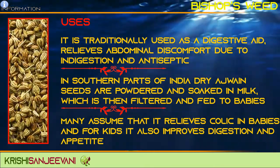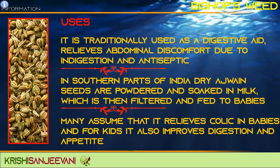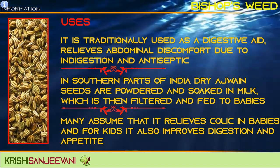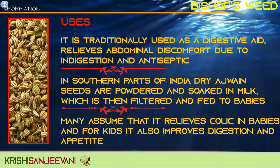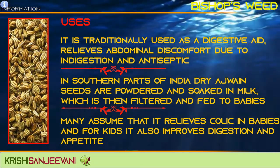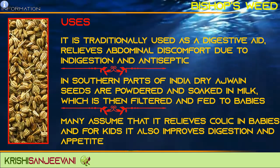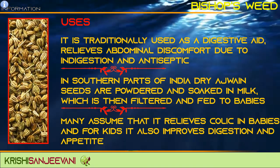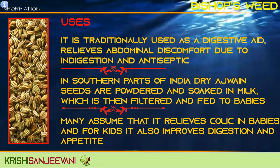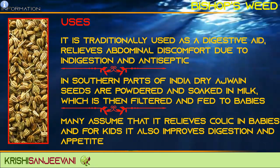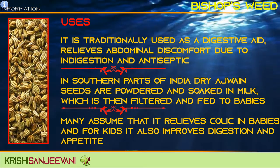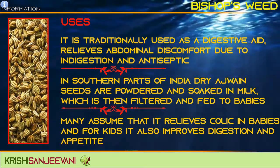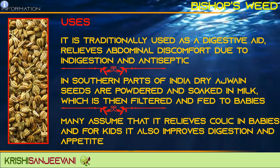Ajwain is traditionally used as a digestive aid, relieves abdominal discomfort due to indigestion, and is antiseptic. In southern parts of India, dry Ajwain seeds are powdered and soaked in milk, which is then filtered and fed to babies. Many assume that it relieves colic in babies, and for kids it also improves digestion and appetite.